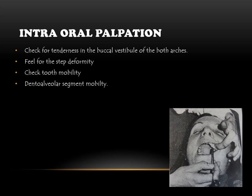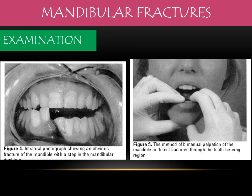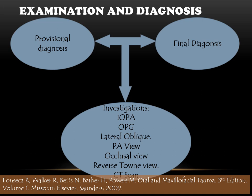Intraoral palpation involves checking for tenderness in the buccal vestibule on both sides, feeling for any step, checking tooth mobility, and dental alveolar segment mobility. Bimanual palpation involves placing the thumb on the lower border of the mandible and the index finger on the teeth, then attempting to move the segments to elicit movement.